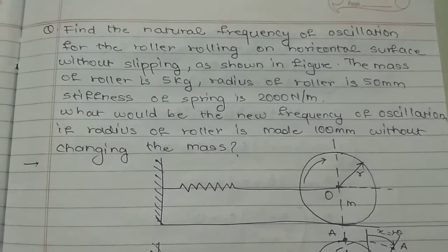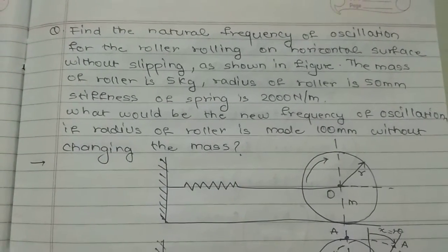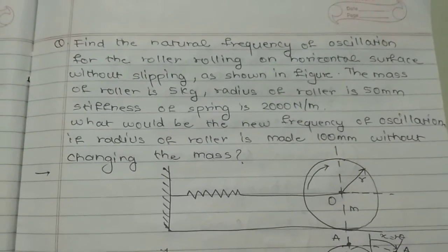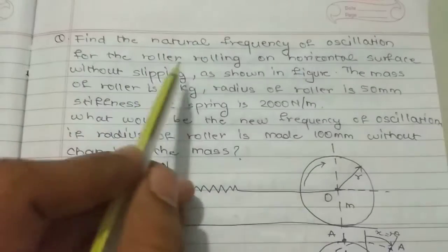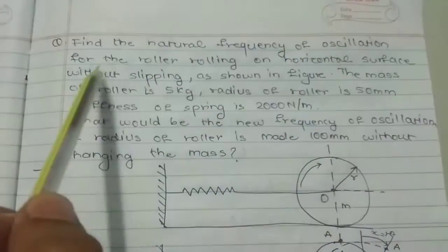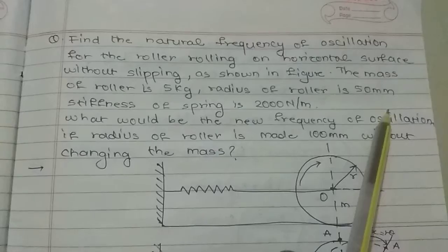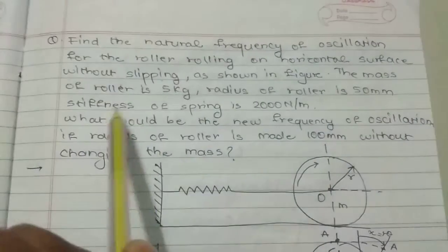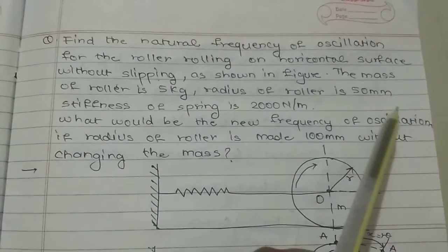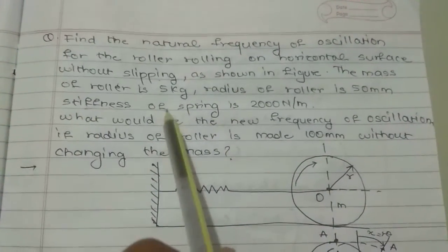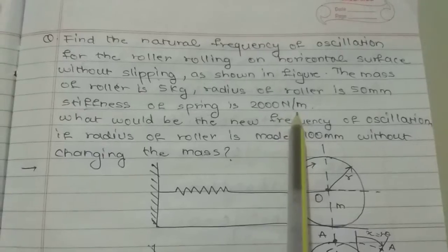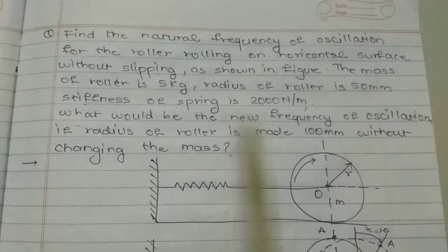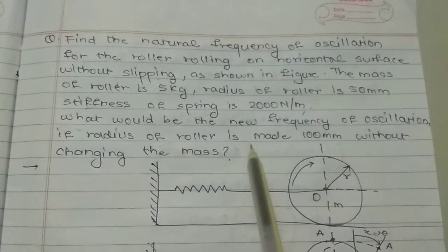Hey guys, welcome to my channel, The Mechanical Engineer. I am with another numerical from mechanical vibration. We have to find the natural frequency of oscillation for the roller rolling on a horizontal surface without slipping, as shown in the figure. The mass of the roller is 5 kg, radius of roller is 50 mm, stiffness of spring is 2000 Newton per meter.